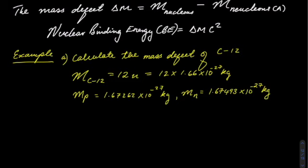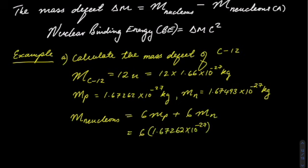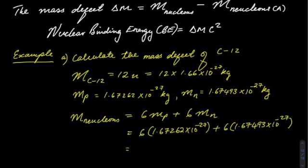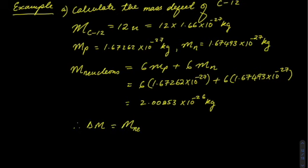Since Carbon-12 has 6 protons and 6 neutrons, the total mass of the nucleons will be given by 6 times the mass of protons plus 6 times the mass of the neutrons. And this will give us 2.00853 times 10 to the power minus 26.